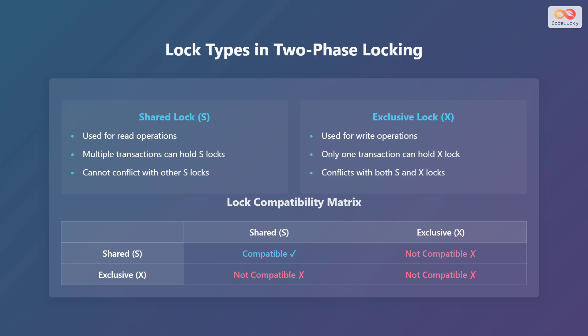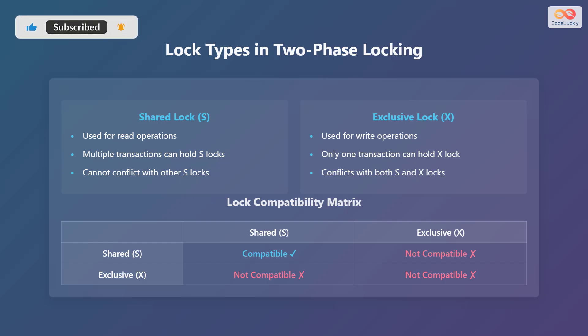Here is a lock compatibility matrix. If a transaction has a shared lock, another transaction can also have a shared lock. However, if a transaction has a shared lock, another transaction cannot have an exclusive lock and vice versa. Similarly, two transactions cannot have exclusive locks on the same data.